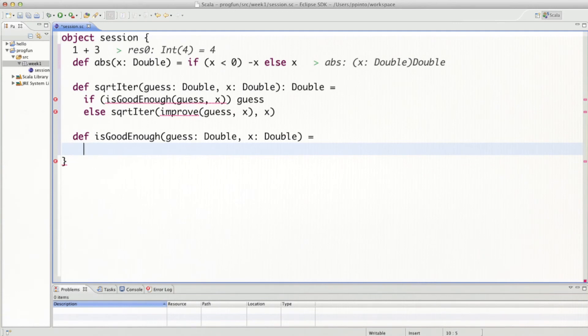Is good enough takes the same parameters as square root iter and it returns a boolean that says whether we can stop the iteration or whether we need more steps. So what could that predicate be? One way to do it would be to say, if we take the current guess here and we square it, if we're close enough to the original value x, then guess by itself would be close enough to the desired square root value. So let's code that up. This would say guess times guess minus x. We would have to take the absolute value of that. And it would have to be smaller than some epsilon value, let's say zero zero one for the moment.